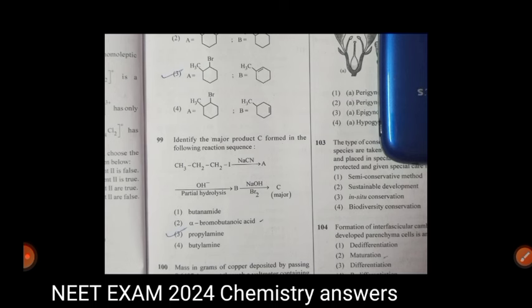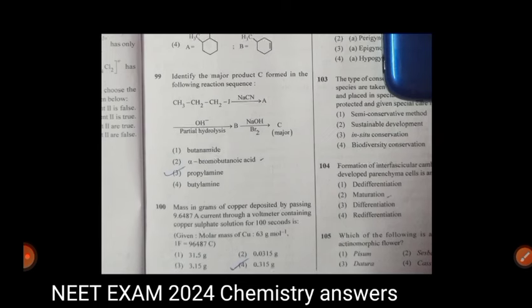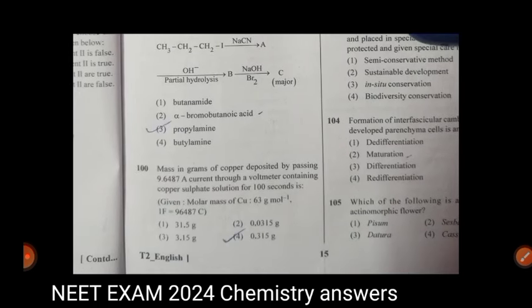Question 99, identify the major products C formed in the following reaction sequence. Propylamine, answer third one. Question 100, mass in grams of copper. Answer is fourth one.